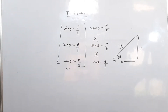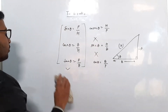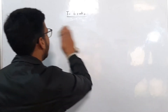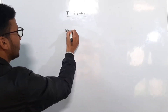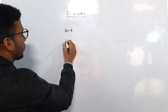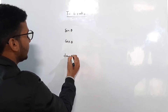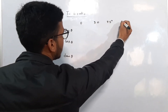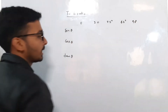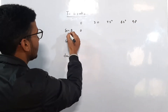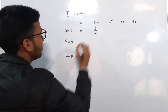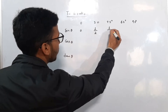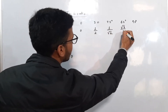We must remember the trigonometric values at particular angles. We need to remember sin theta, cos theta, and tan theta for 0°, 30°, 45°, 60°, and 90°. For sine: sin 0° = 0, sin 30° = 1/2, sin 45° = 1/√2, sin 60° = √3/2, and sin 90° = 1.